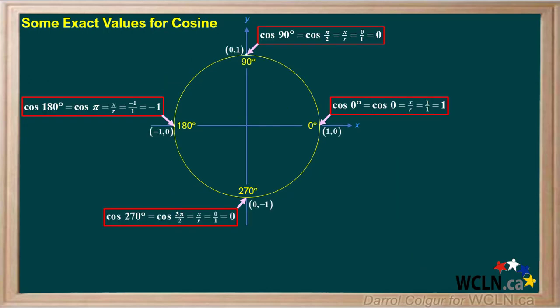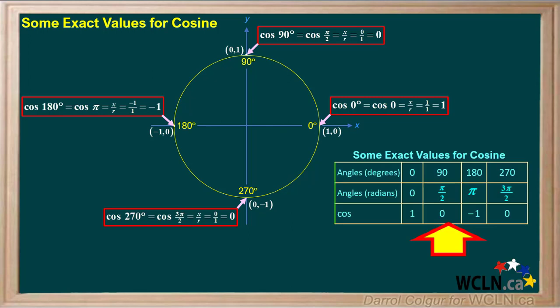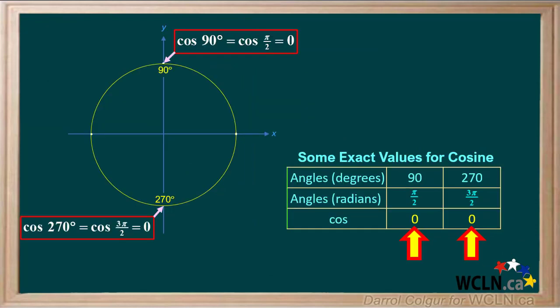Exact values for the cosines of the four angles shown can be obtained from a circle like this, using x and y coordinates. If you like, pause the video, check each angle and its coordinates and see how the values of cosine are obtained. This table summarizes the values of cosine for these four angles. Notice that 90 degrees or pi over two radians and 270 degrees or three pi over two radians have a cosine equal to zero. Here is a simplified version of the diagram and the table showing only the two angles for which the cosine equals zero. It's very important to become familiar with the angles for which cosine is zero.